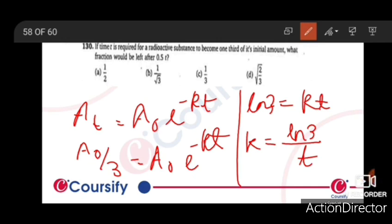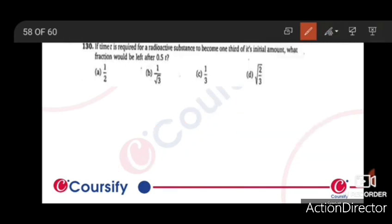When we get one-third of its initial amount - now we get one-third at time t. So we will see what happens at 0.5t.